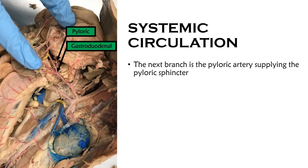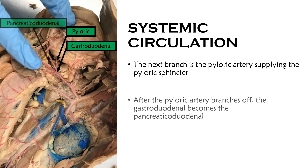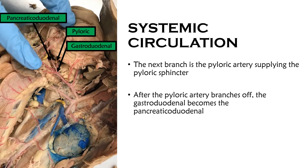Branching off the gastroduodenal is the pyloric artery, which supplies the pyloric sphincter — the muscle that expands and contracts to let food pass from the stomach into the duodenum of the small intestine. After the pyloric artery branches off, the gastroduodenal then becomes the pancreaticoduodenal artery, which supplies the pancreas and the entirety of the small intestine.